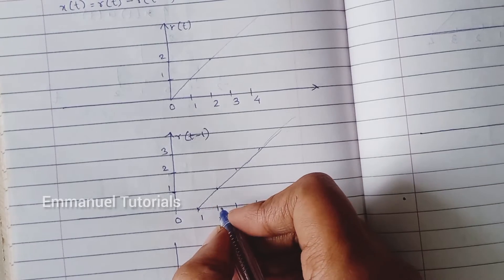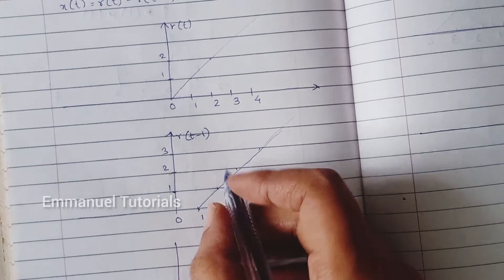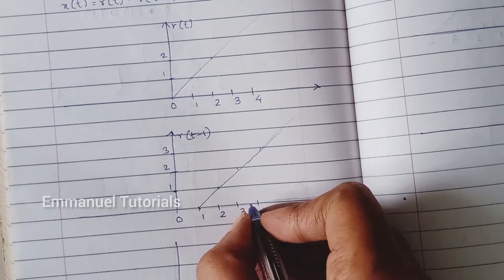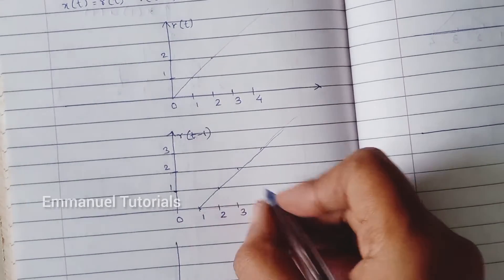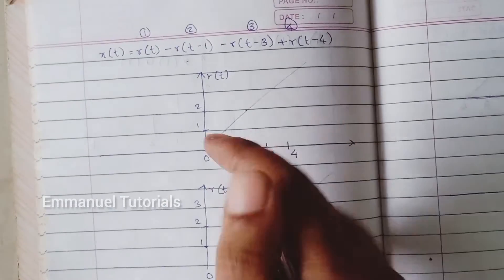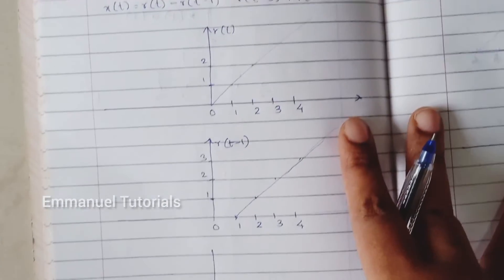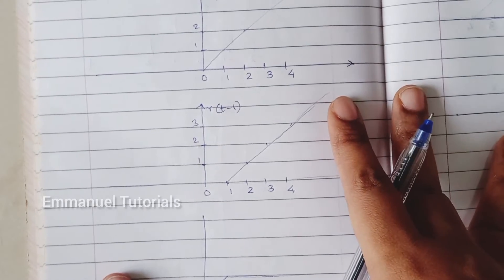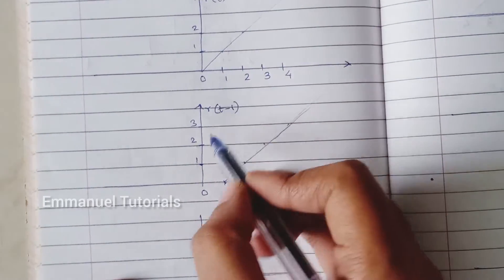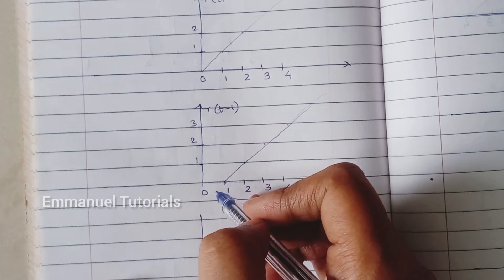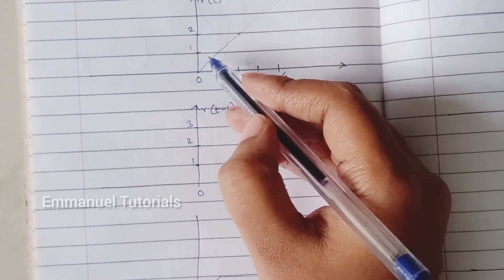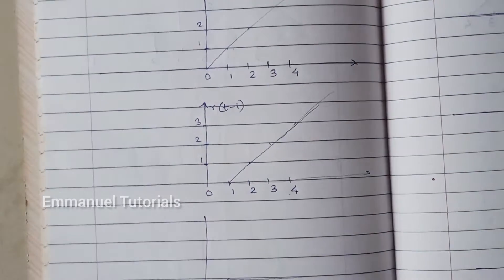At t equal to 2, the amplitude of r(t minus 1) is 1, not 2, because we have shifted it to the right. Similarly, at t equal to 3 it is 2, and at t equal to 4 it is 3, and so on. Now we subtract these two signals. From 0 to 1, since the second signal's amplitude is 0, we can draw the first signal's shape as it is.